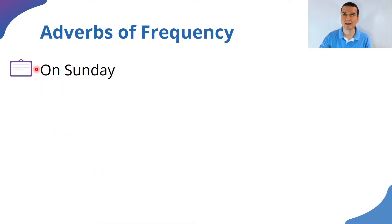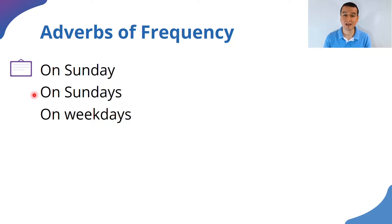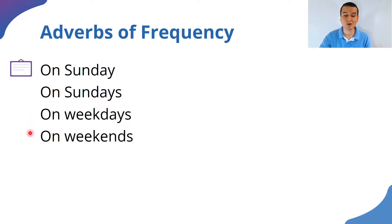Before days, we usually use the preposition 'on.' We say 'on Sunday' — we don't say 'the Sunday,' we say 'on Sunday,' or if it's plural, 'on Sundays.' During Monday to Friday, we say 'on weekdays,' and during the weekend, we say 'on weekends.' Those are the expressions we can use to indicate when we do things.